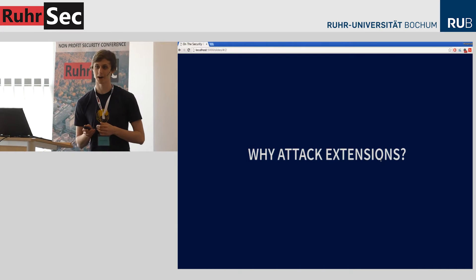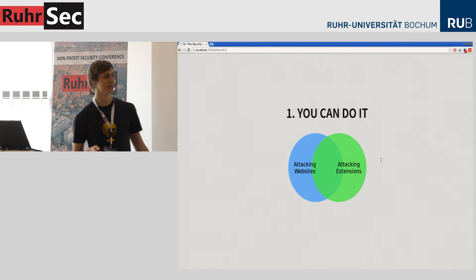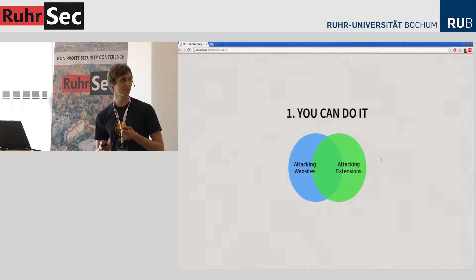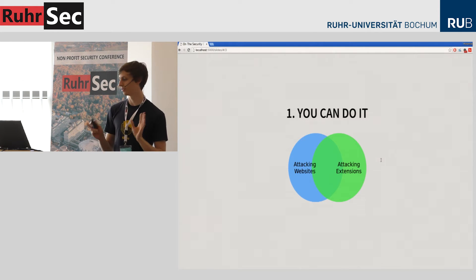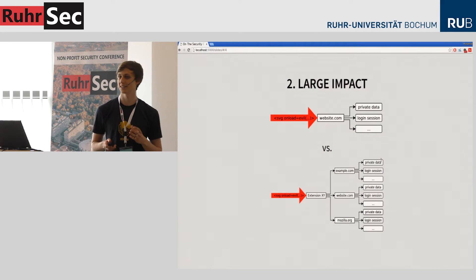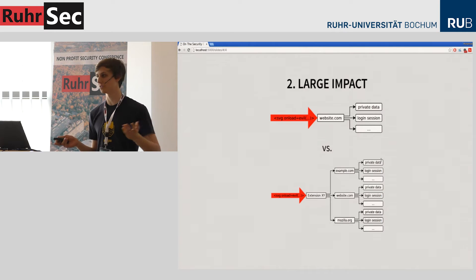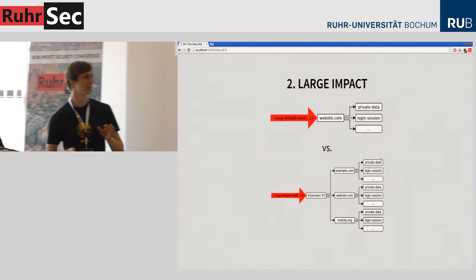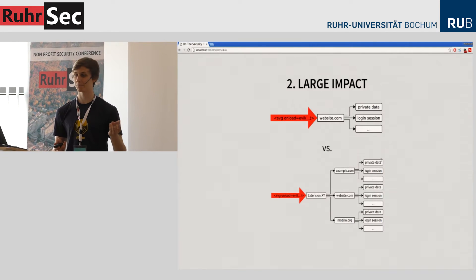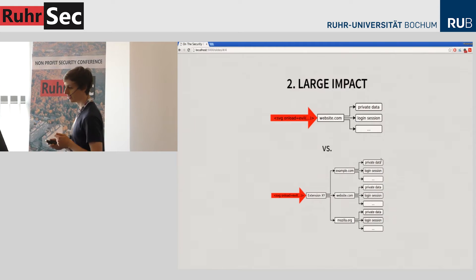So let's ask ourselves: why should we attack extensions? First of all, if you know some basic web security, you can already attack extensions. There is a large skill overlap, so if you know your stuff about XSS, you can basically attack almost any extension out there. Second, there is a multiplication in impact, because when you own a website with XSS, you get access to the user's private data, but when you own an extension, you get access to all the websites the extension has access to — which could be all of the internet. Think about Adblock, for example.